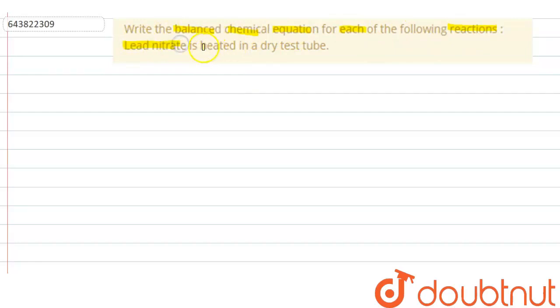Lead nitrate is heated in a dry test tube. So in this equation, we have to write a balanced chemical equation when lead nitrate is heated in a dry test tube.